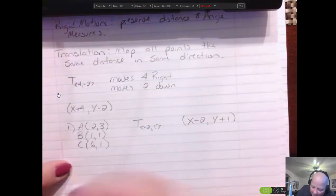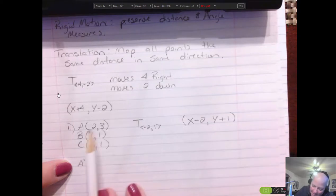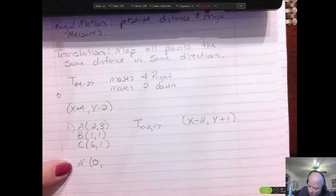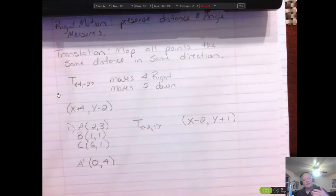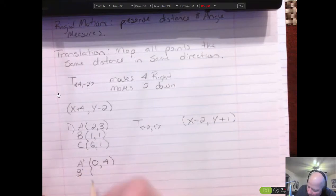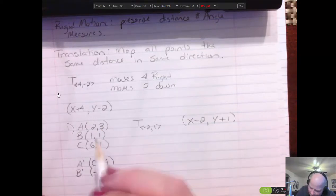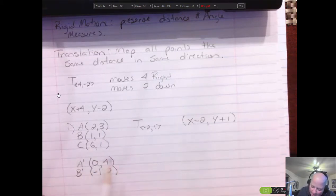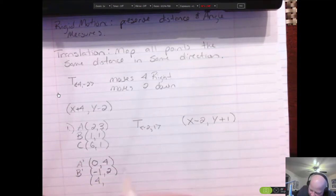So let's take each of these points. I'm going to call them A apostrophe. That's going to be our image. And let's do this to each point. So we're going to take this 2 first and we're going to minus 2, which would give us 0. And then we're going to take this 3 and we're going to add 1, which would give us 4. So the image of A is going to be 0, 4. What's our image of B going to look like? Well, 1 minus 2 is negative 1, and 1 plus 1 is 2. 6 minus 2 is 4, and 1 plus 1 is 2. And this is C. And that's all there is to it.